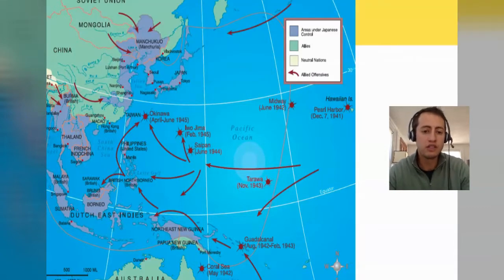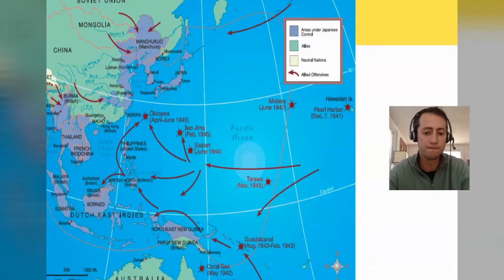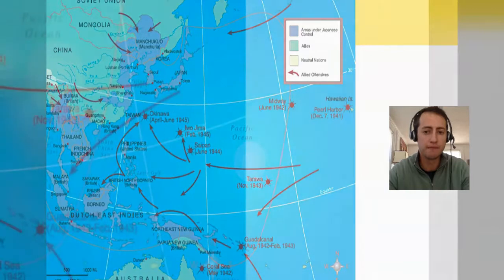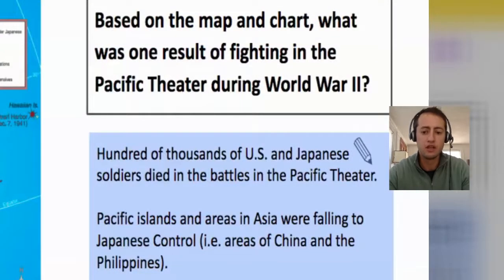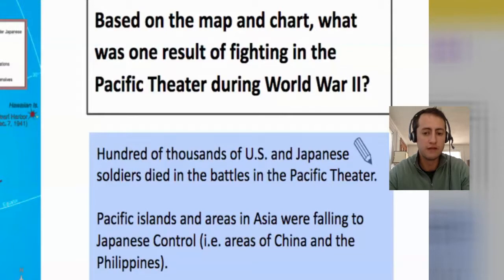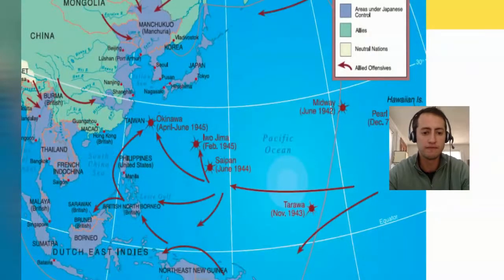But when you look at the map, you can see that there were definitely more than those three battles that took place — for example, Midway and Pearl Harbor, which took place a little bit earlier. So what information can you gather from this chart and the map? Well, straightforwardly, we can see that hundreds of thousands of U.S. and Japanese soldiers died in the battles in the Pacific Theater. Looking more closely, we can see that Pacific Islands and areas in Asia were falling to Japanese control.